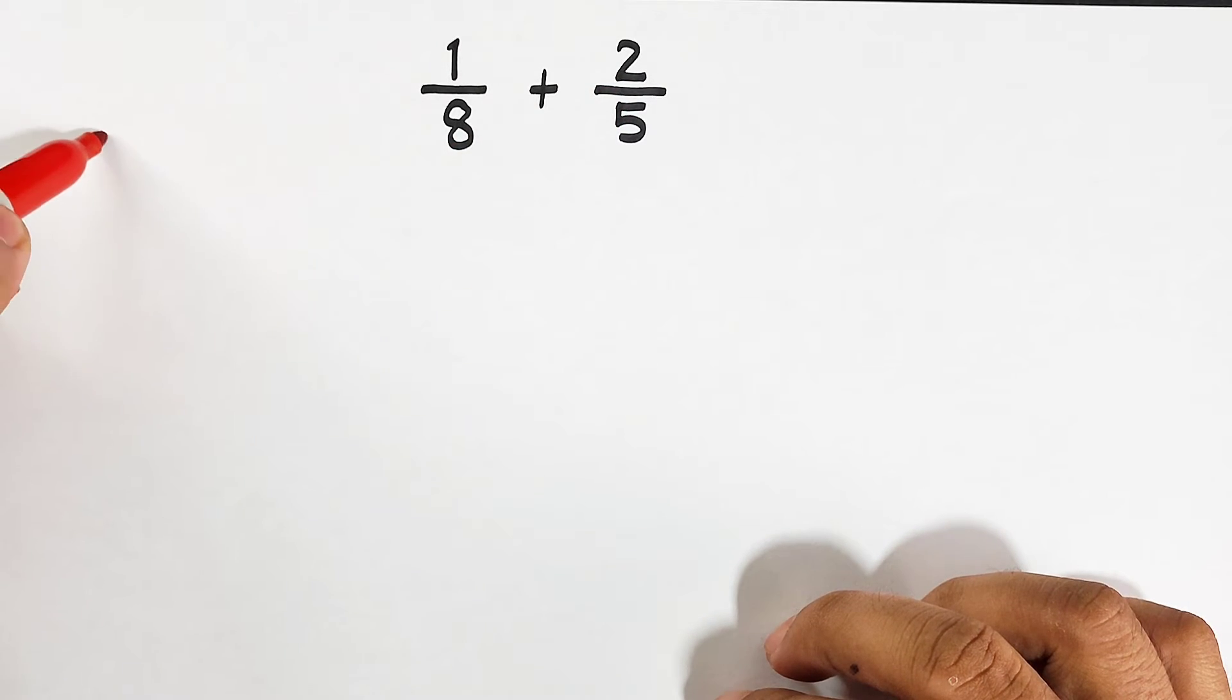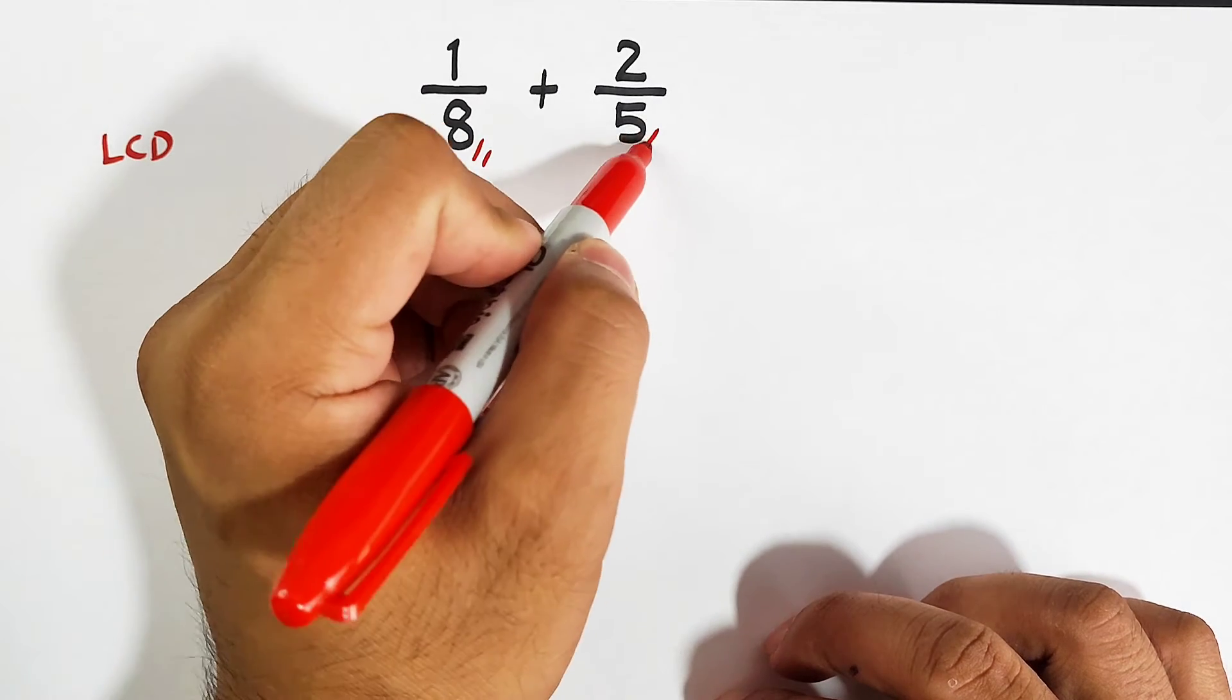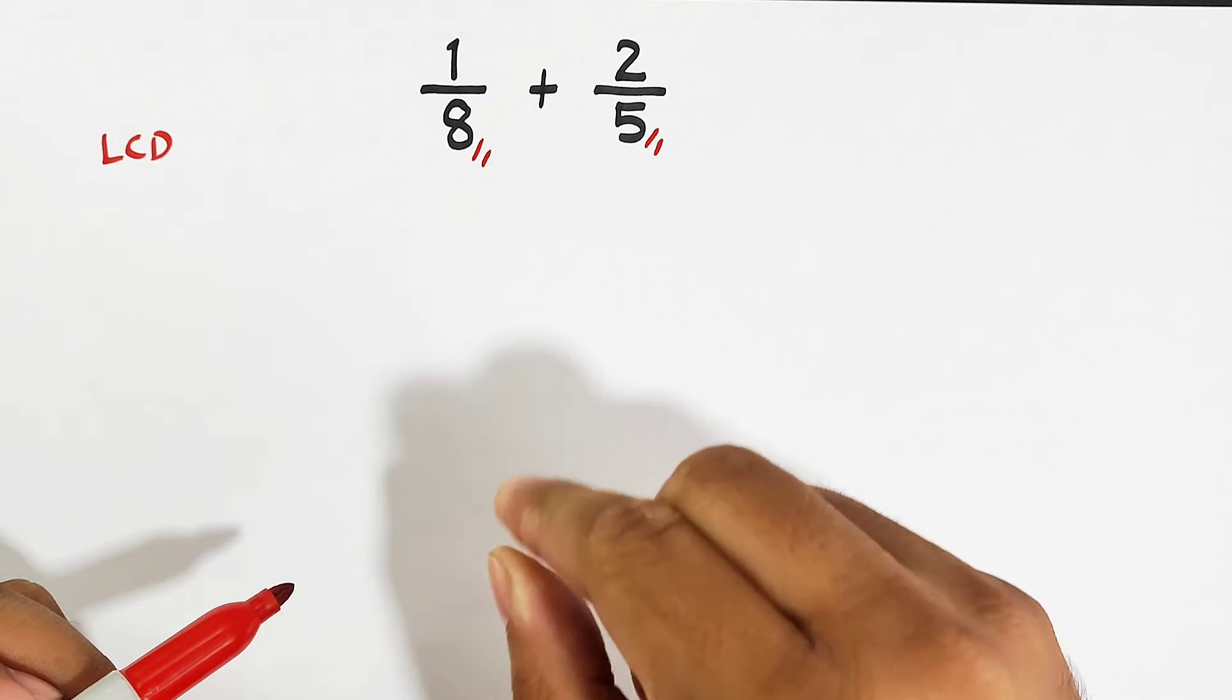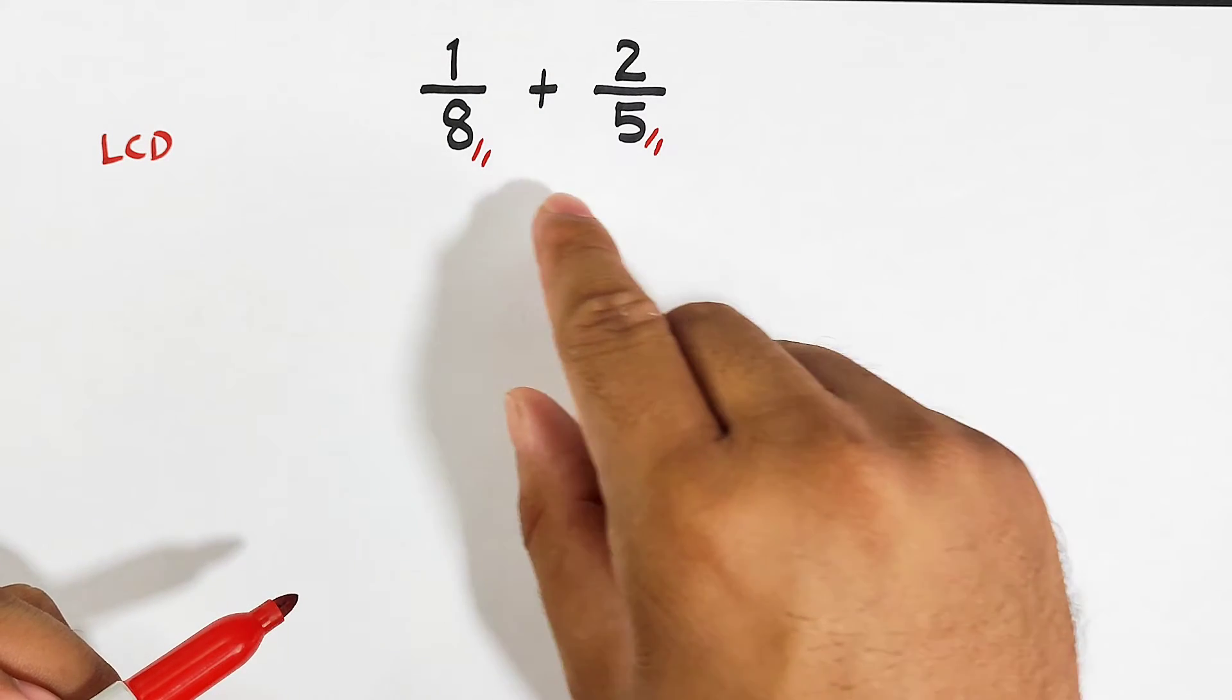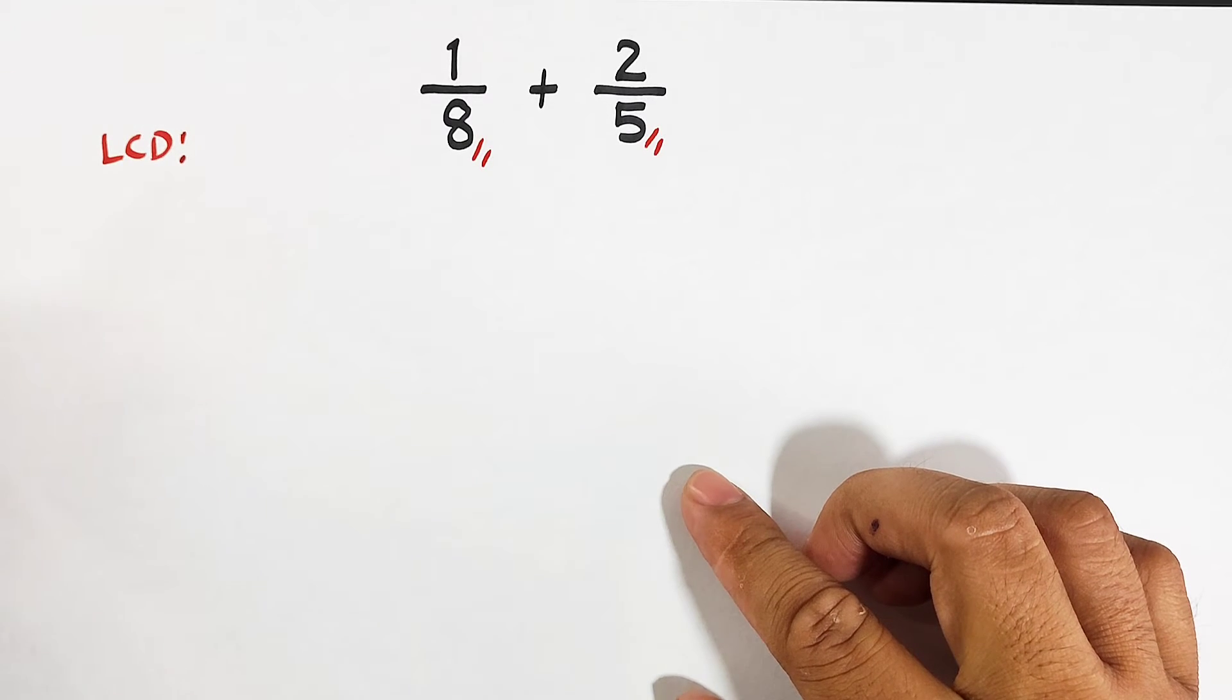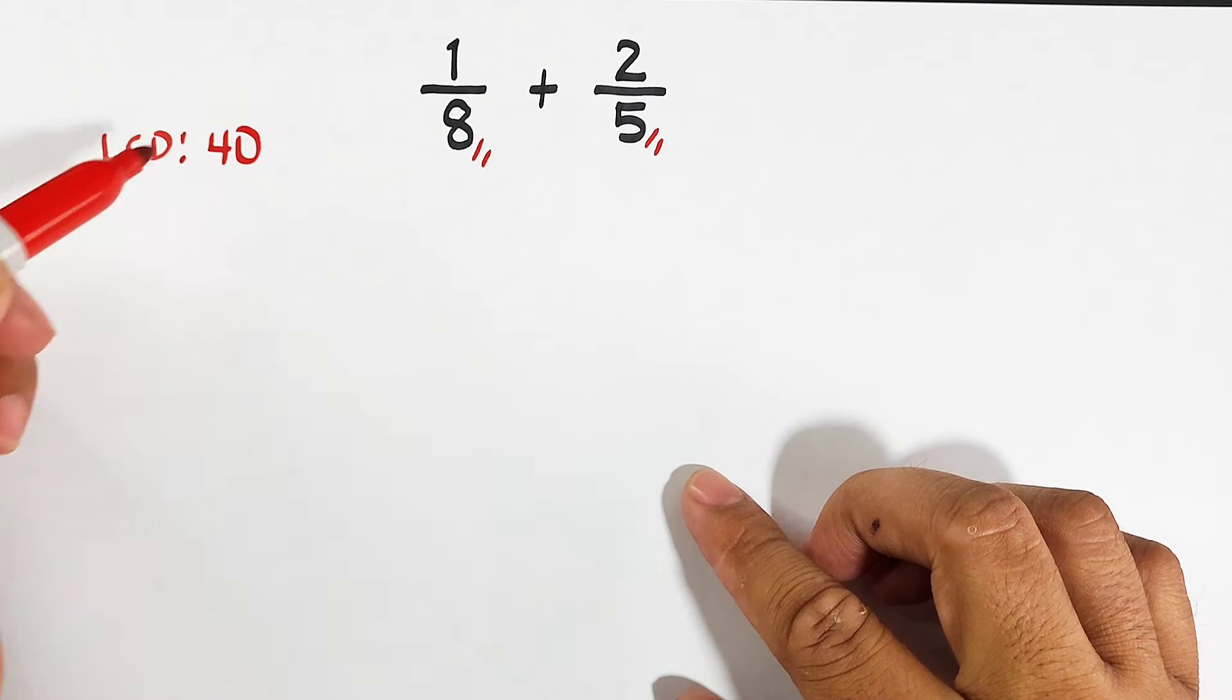We need to find the LCD because the denominators of the fractions are different. If the denominators are 8 and 5, the LCD is 40.